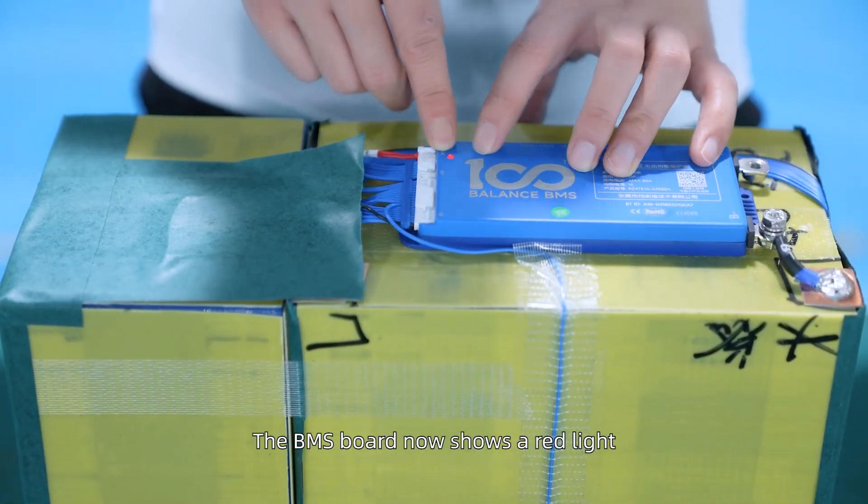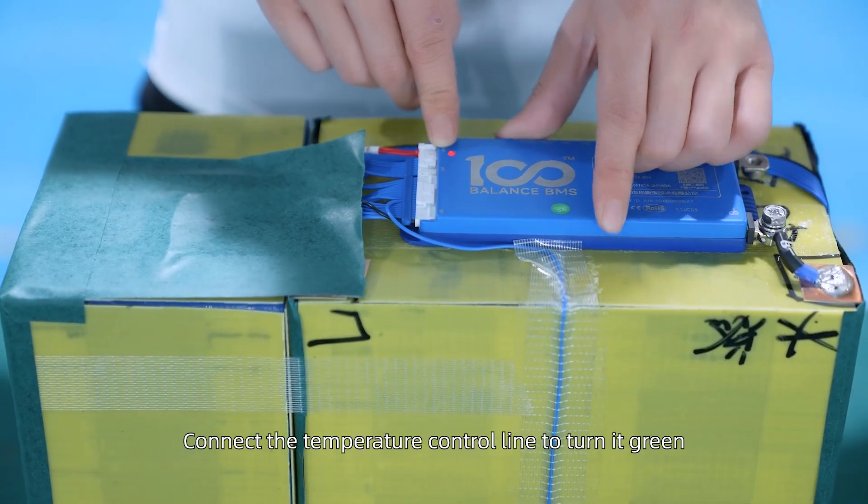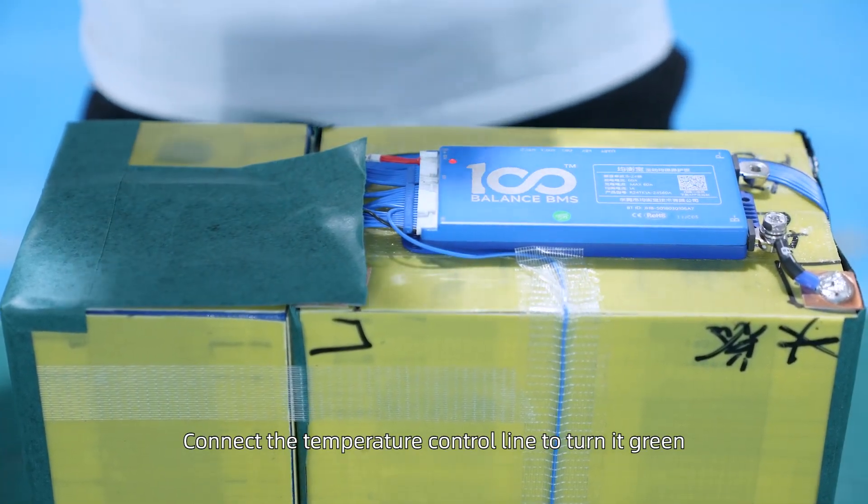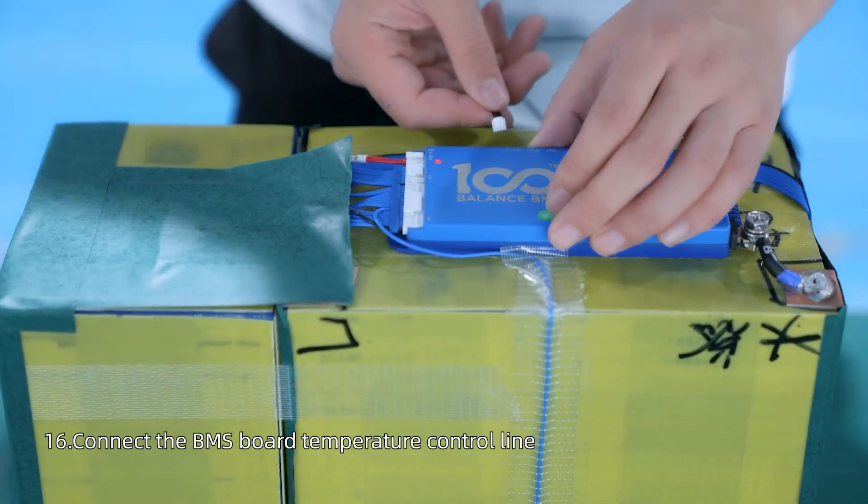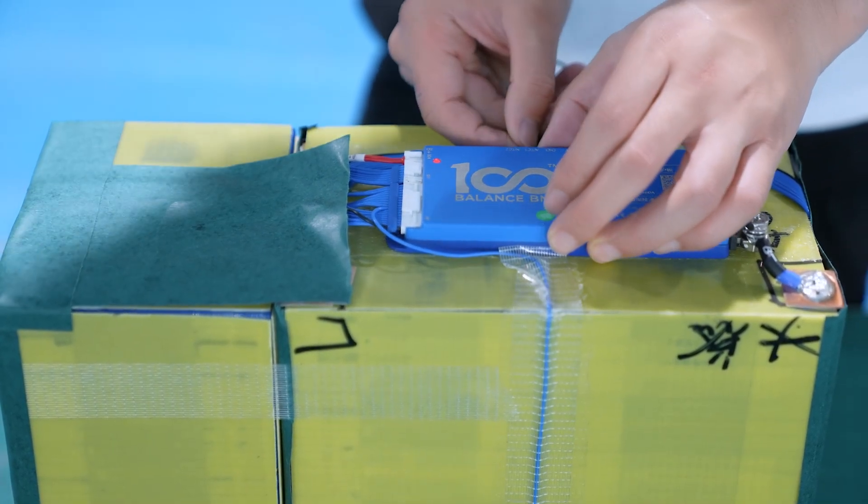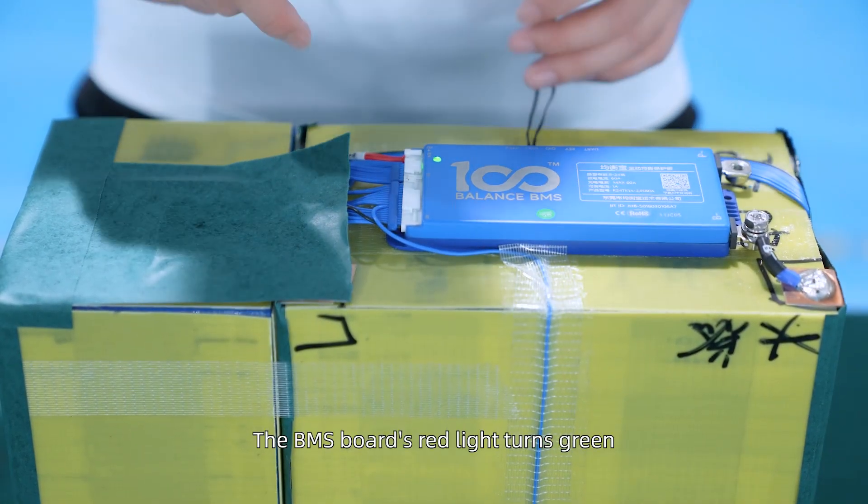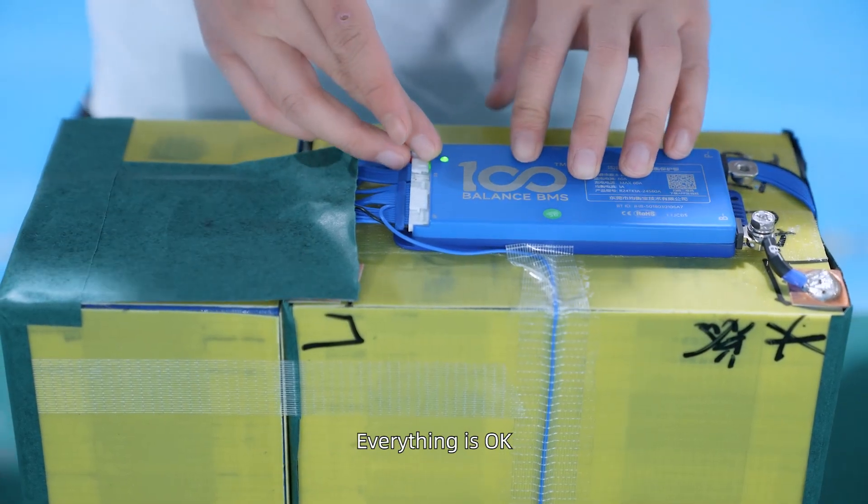The BMS port now shows a red light, connect the temperature control line to NTC. Connect the BMS port temperature control line. The BMS port's red light turns green, now everything is okay.